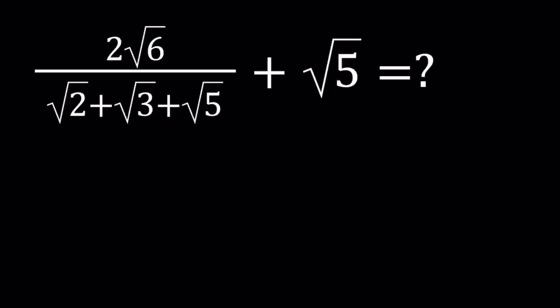Hello everyone. In this video we're going to be simplifying a radical expression. We have 2 times the square root of 6 divided by square root of 2 plus the square root of 3 plus the square root of 5, plus the square root of 5. I'll be presenting two methods and let's start with the first one.